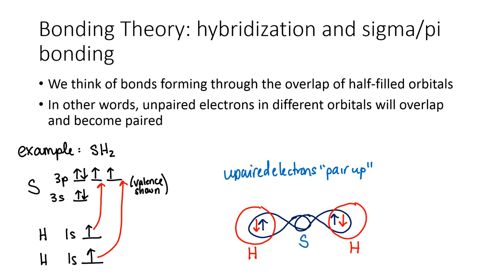Welcome. This video is going to be about bonding theory, where we're going to look at bond orbital hybridization and sigma pi bonding. We think of bonds as forming through the overlap of half-filled orbitals — unpaired electrons in different orbitals will overlap and become paired.